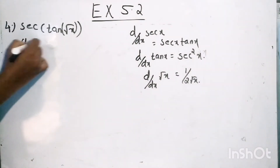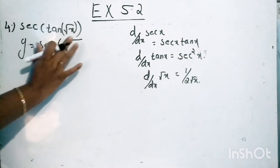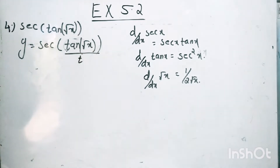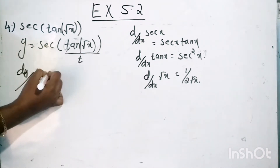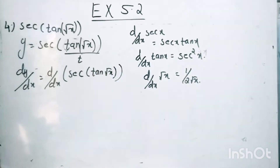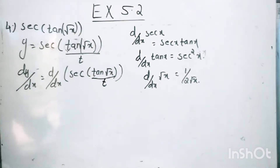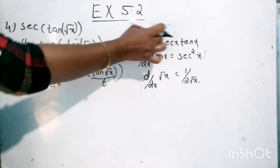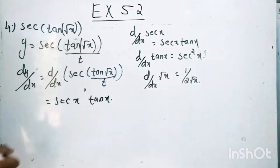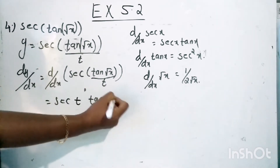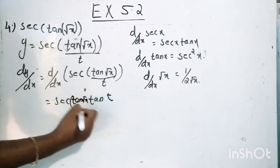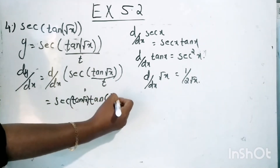Now just listen. y is equal to cosec of tan root x. Just put tan root x equal to t. Then dy by dx involves d by dx of cosec of tan root x. We took tan root x as t, so we have cosec t, and the derivative of cosec t is cosec t into cot t. So we get cosec of tan root x into cot of tan root x, and now we need to find out d by dx of tan root x.